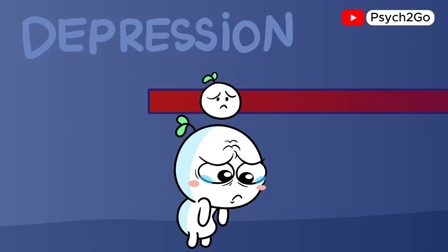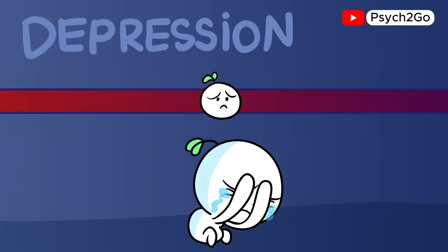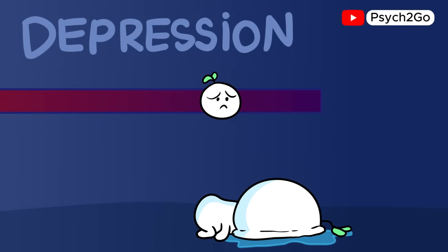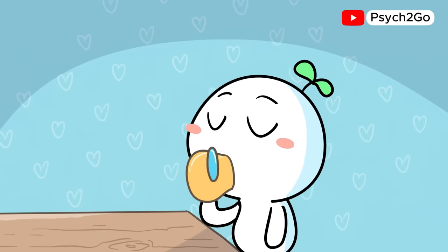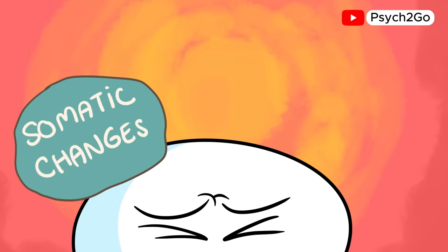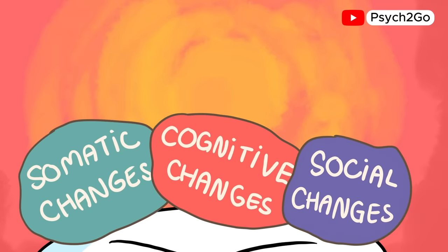According to the American Psychological Association, depression is a negative emotional state that ranges from unhappiness and discontent to extreme feelings of sadness, melancholia, pessimism, and despondency. These feelings are disruptive and often interfere with everyday life. Somatic, cognitive, and social changes tend to co-occur during a depressive episode.